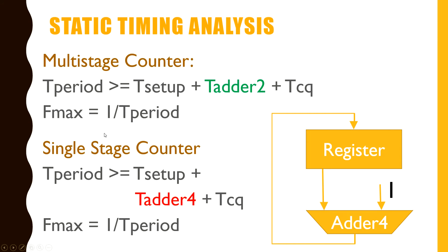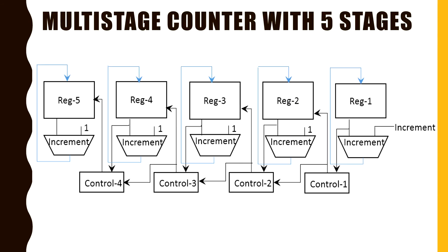In practical situations, we recommend multistage counters only when the counter width is quite high, for example 40-bit, 50-bit, etc. Multistage counters can have any number of stages; the counter shown in the figure has five stages. Stage 1 runs independently, and stage 2 increments its value when the first stage counter overflows. This overflow is detected by control logic 1.